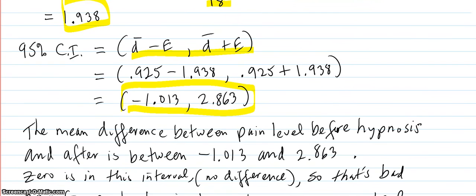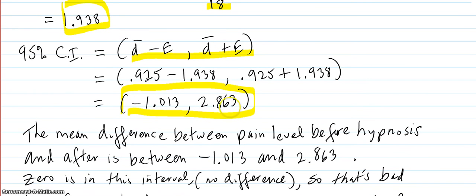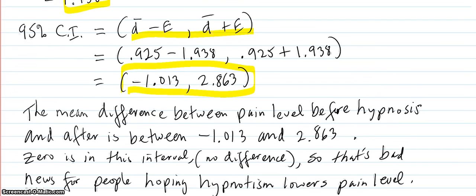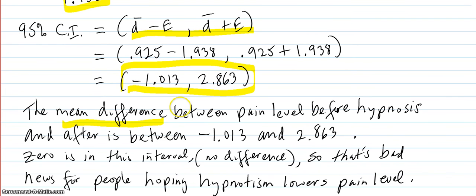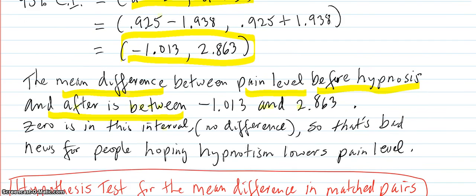So your mean difference lies somewhere between those two numbers. So the mean difference between pain level before hypnosis and after is between negative 1.013 and 2.863.